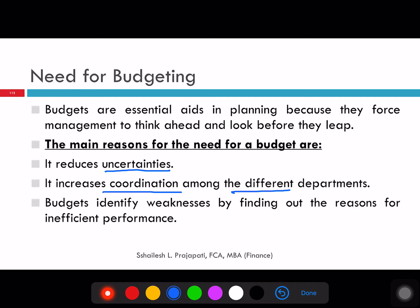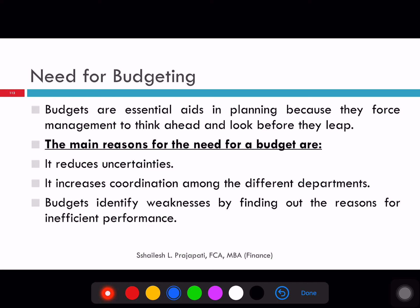Budgeting increases coordination amongst different departments — sales team, production team, accounts team, HR team. The coordination will be proper and they will always see that whatever expenditure they have planned or budgeted is going regularly with no variances. If there are variances, whether on a higher side or lower side, there should be a revision in the budget. Budget also identifies weaknesses by finding out the reason for inefficient performance. It will highlight performance which is inefficient — when a person is not able to spend what they budgeted at year beginning, or if they are overshooting the budget, it shows the inefficiency of that particular department.